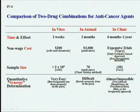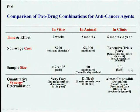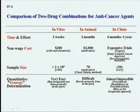Here is a comparison of in vitro drug evaluation, in animal, and in the clinic. Time and effort: in vitro takes two weeks, animal takes two months, clinic takes six months to a year. Material cost is a tremendous difference. Sample size is millions in vitro, tens in animal, tens in clinic. In vitro is easy to do and can give quantitative synergy. Animal is difficult, expensive, and slow. Clinic is almost impossible due to ethical, scientific, and practical reasons, as discussed in my leukemia and lymphoma review article.